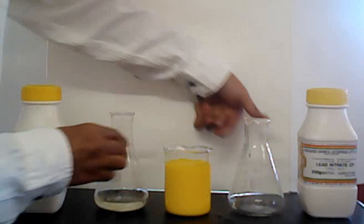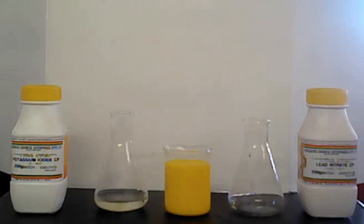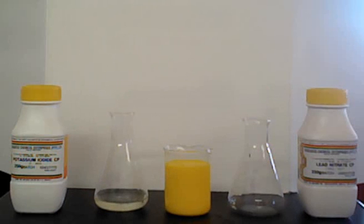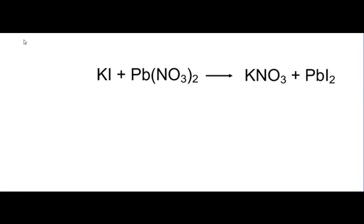There we see a beautiful reaction where we get a yellow precipitate. The reaction is: lead nitrate plus potassium iodide will form lead iodide. Lead iodide makes the yellow color, and potassium nitrate which is soluble. So looking at the equation: potassium iodide plus lead nitrate forms potassium nitrate plus lead iodide.